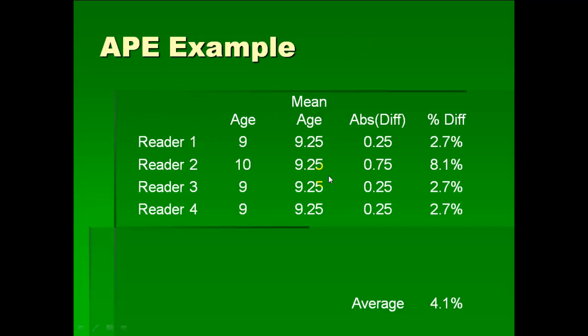Here are four readers all aging the same structure. And in the first column you see the age that each reader gave to this structure. So three out of four called it nine, one called it ten, so pretty good precision. In the second column you see the mean age. So across all the readers, this is the average age that they've given.